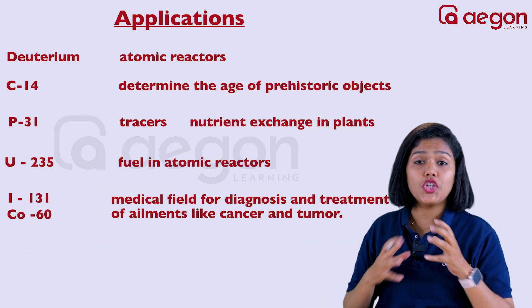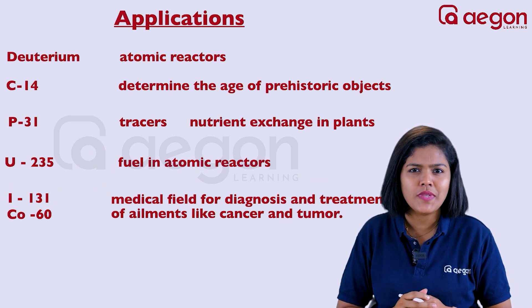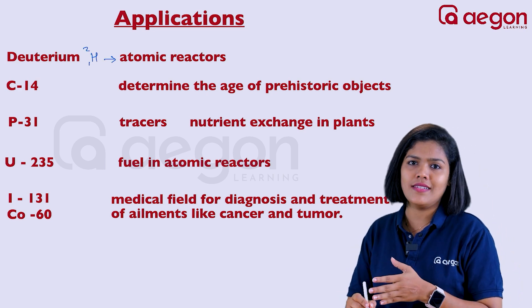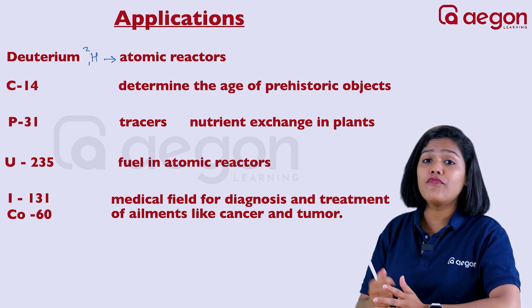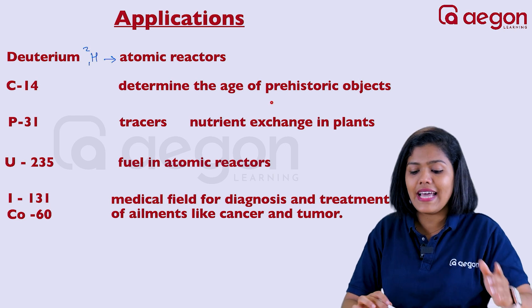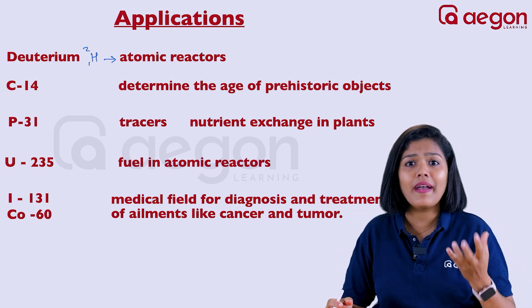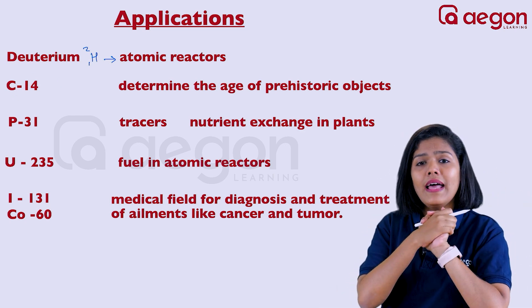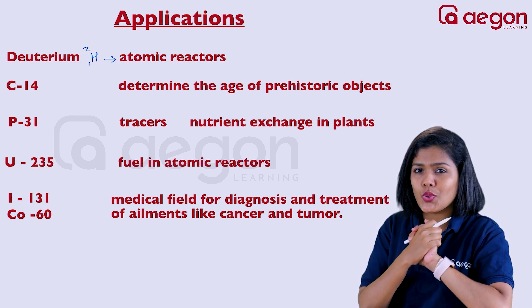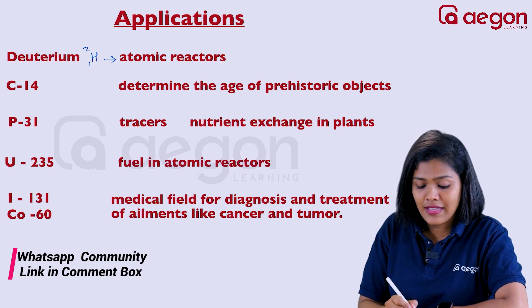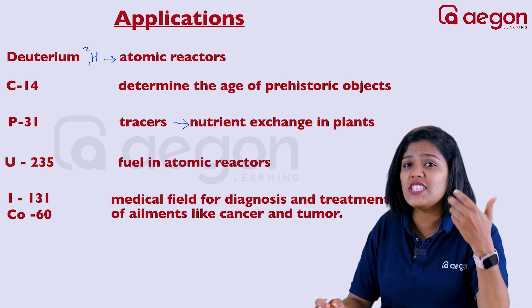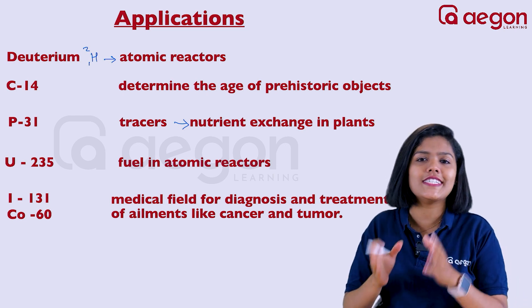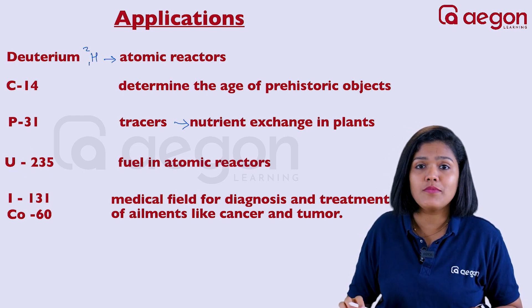Let's take a few examples of different isotopes and their applications. The first one is deuterium — H-1-2 — and it is used in atomic reactors. Next, carbon-14 is used to determine the age of prehistoric objects. Then phosphorus-31: we use tracers to find the nutrient exchange in plants.